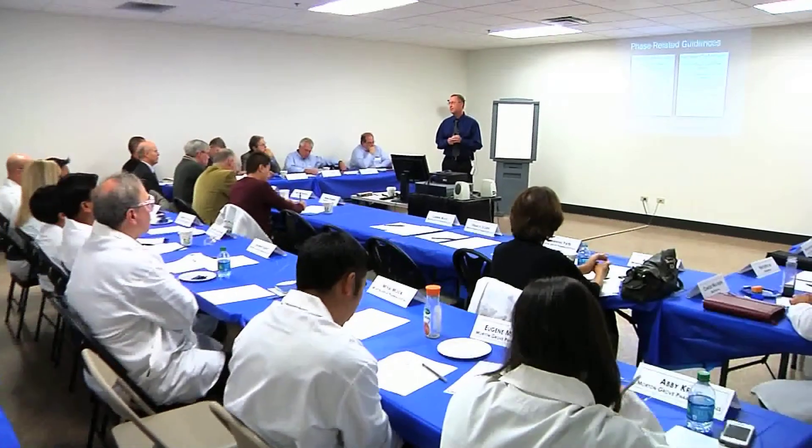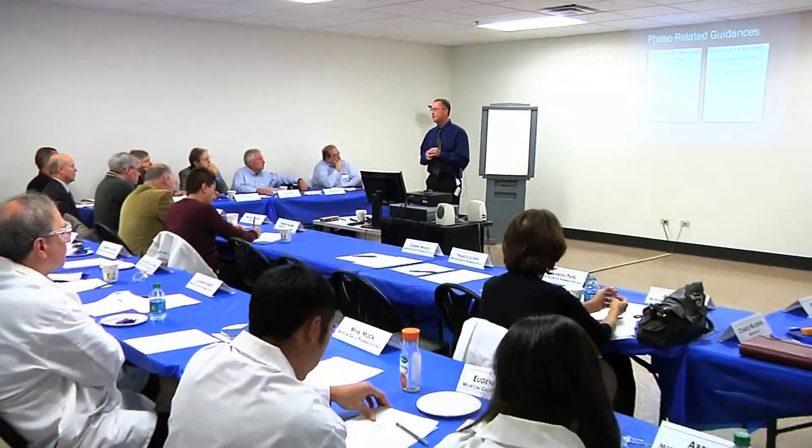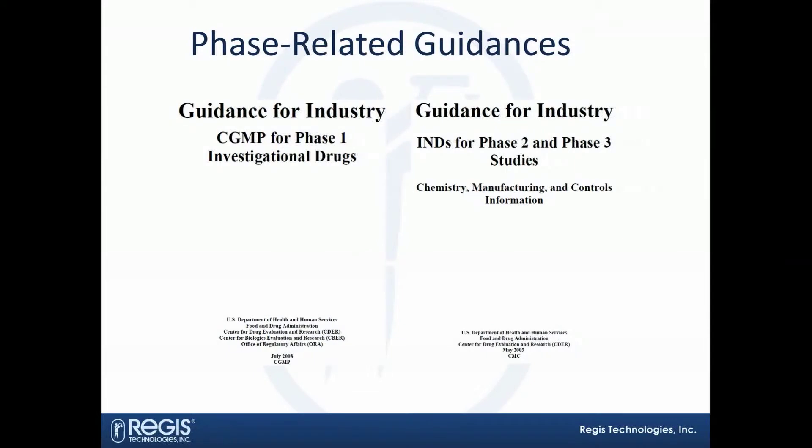The overall rigor of test methods will increase as a project evolves. There are some phase-related guidances here — just put up as flags or reminders that these are things you can read into. To my knowledge, nothing says absolutely that you have to validate your methods at phase one or phase two, but industry practices seem to be that you validate at phase two. From my own experiences working with customers and past projects, the FDA has actually said they wanted to see methods validated at phase two.